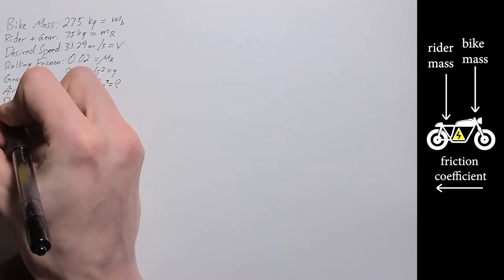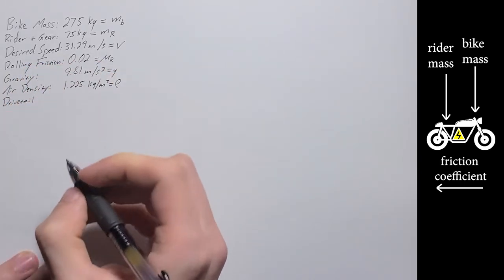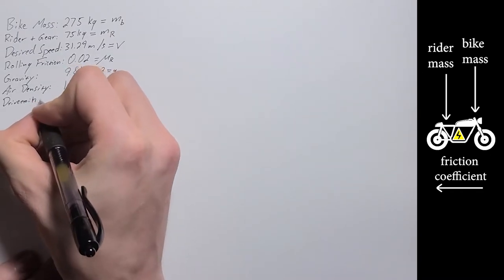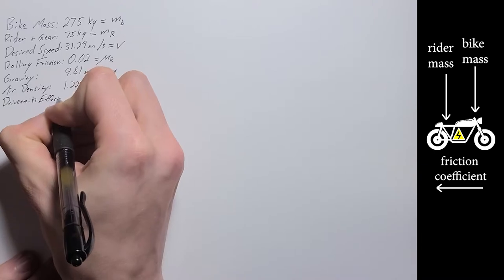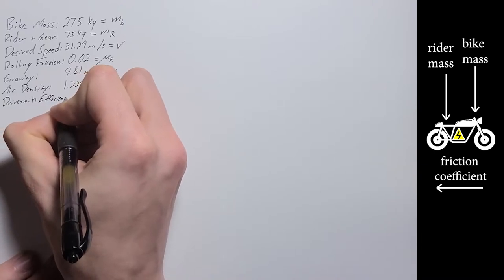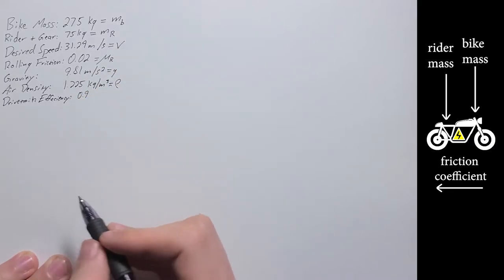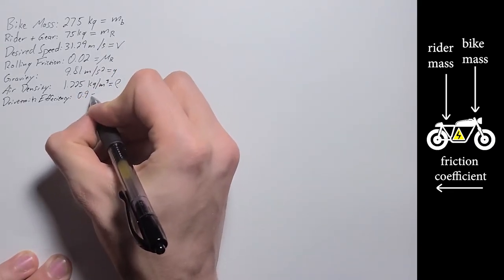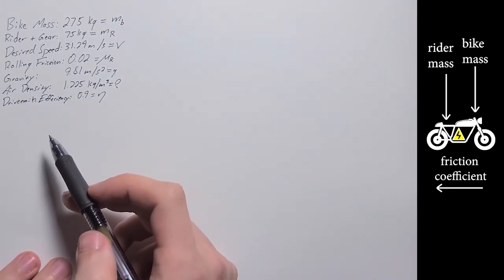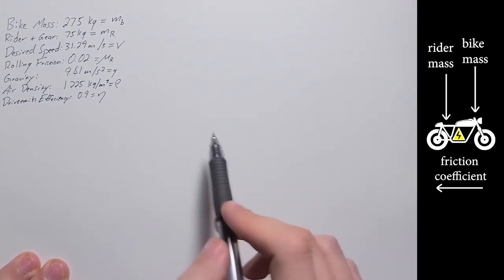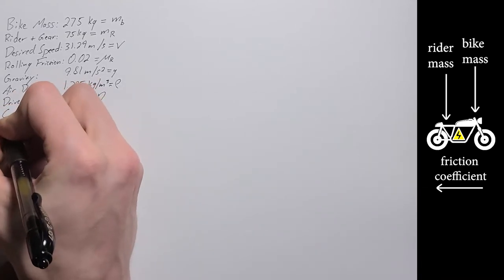And then this is where we start to bake in some of that conservatism. So we're going to go with our drivetrain efficiency. I'm going to assume roughly 90% or 0.9 as our drivetrain efficiency. So the power the motor puts out, 90% of that will get through all the way to the back wheel.